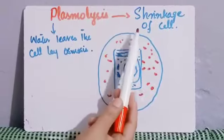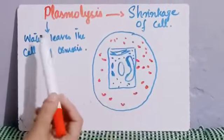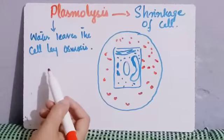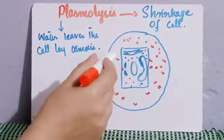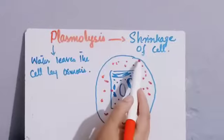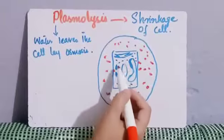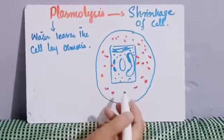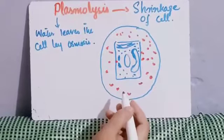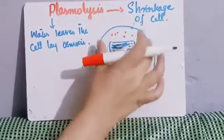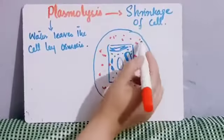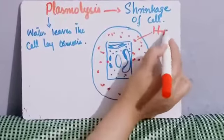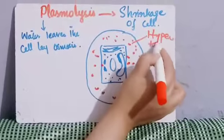Shrinkage of cell happens in the plant cell when we keep this plant cell in the hypertonic solution. What is happening with the plant cell when we keep this plant cell into the hypertonic solution?